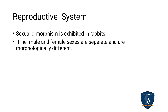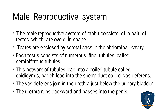Next we move on to the reproductive system. Sexual dimorphism is seen in rabbits — there is a separate male rabbit and female rabbit. Sexual dimorphism means the presence of different sexes; the sexes are separated and are morphologically, that is externally, different from each other.